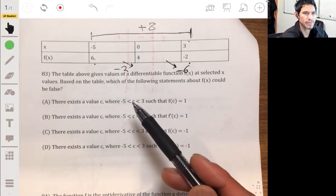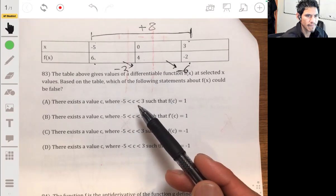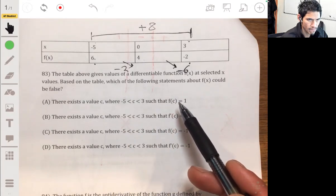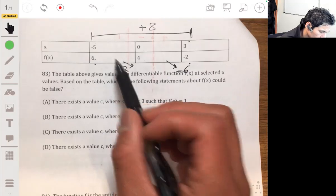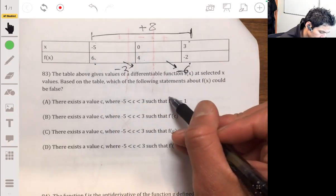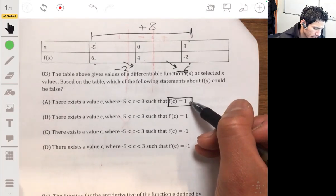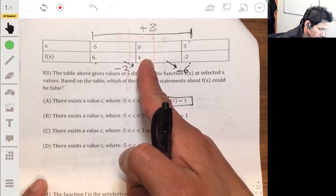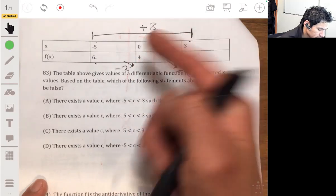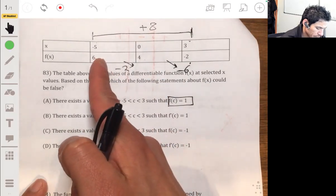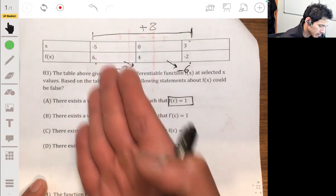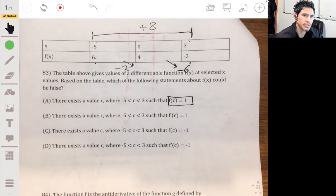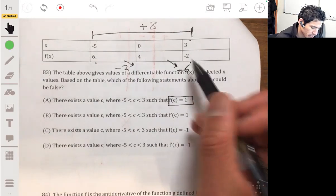For option A, there exists a value c where c is between negative five and three such that f of c is one. Okay, so this could be true because it's just saying is it possible that y could be one in this interval, and it is. Just because it goes from six to four and then four to negative two, it doesn't tell you what happens between here. Maybe it goes up to 20 or down to negative 100 then goes back up to four. We only know that at those endpoints it's those values. We don't know what's going on between any values. Theoretically possible between them.